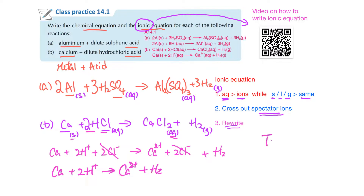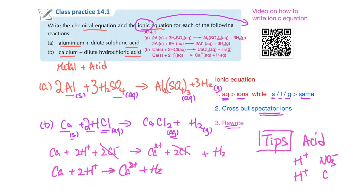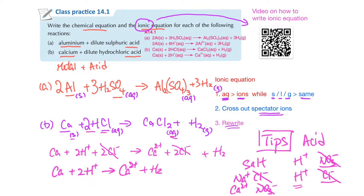When rewriting the ionic equation, here's a tip: acids contain two parts — H⁺ and an anion (NO₃⁻ or Cl⁻). The anion part is normally crossed away, leaving behind H⁺. For salts like Na⁺Cl⁻ or Ca²⁺NO₃⁻, the anion or cation parts are crossed away. So for part A, sulfate is crossed out leaving Al³⁺ and H⁺, giving Al and hydrogen. For part B, Cl⁻ is crossed out leaving Ca²⁺ and 2H⁺.